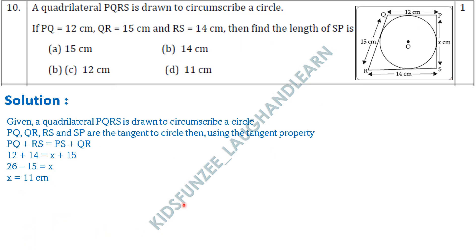Question 10: A quadrilateral PQRS is drawn to circumscribe a circle. Given PQ = 12, QR = 15, RS = 14, find SP. Using the tangent property: the sum of opposite sides of a circumscribed quadrilateral are equal, so PQ + RS = PS + QR. Substituting: 12 + 14 = x + 15, giving x = 26 − 15 = 11 cm. The answer is option D: 11 centimeters.